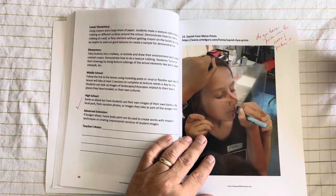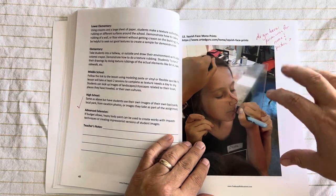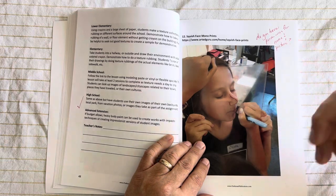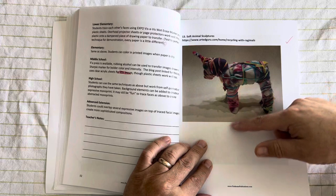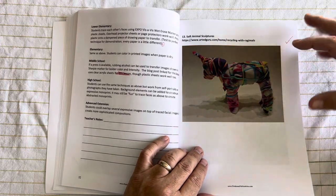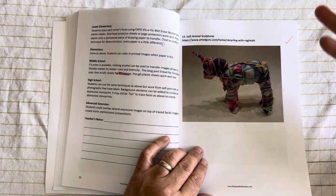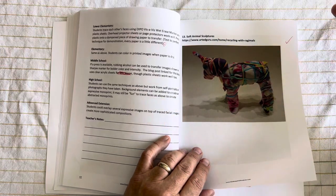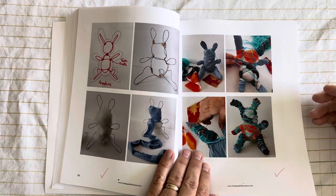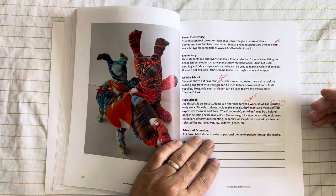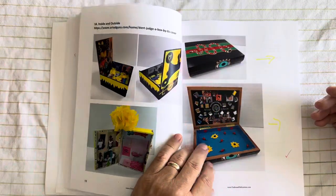I call this squish face monoprints. So we show how to use acrylic plates and rubbing alcohol to make prints of faces, soft sculptures with animals to show maybe recycling with different kinds of fabrics and yarns, which is an awful lot of fun. And we have lots of more pictures in this book to kind of show you the in-between steps and the different possibilities that you have with these lessons.